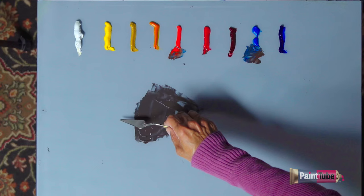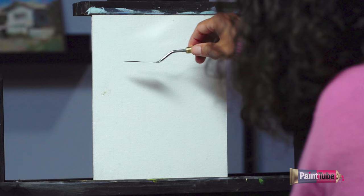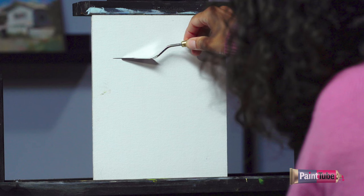And so what I do now is I just slowly drag my knife like this across the paint. And then I lay it gently on my canvas, and I just slowly drag my knife across like that.